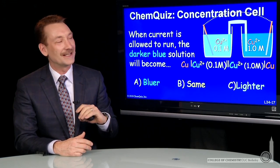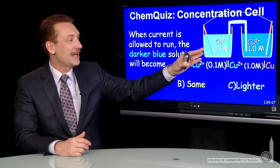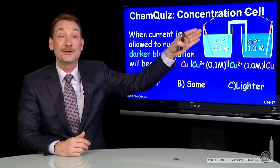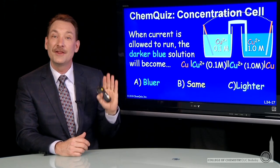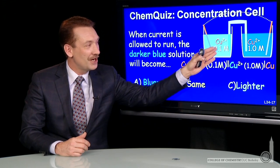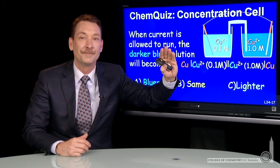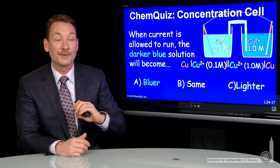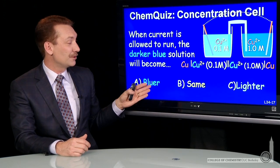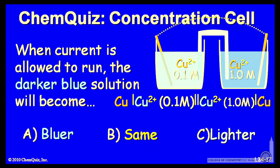Let's look at a different kind of galvanic cell. Here I have copper ions and copper metal in association with copper ions and copper metal in a galvanic cell. The only difference is the concentration of copper ions is lower here than here. So when current is allowed to flow, will the darker blue solution become even darker blue, stay the same, or get lighter? Think about that for a minute and make a selection.